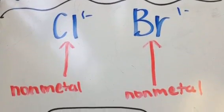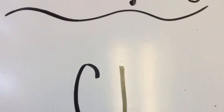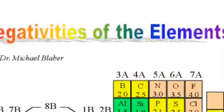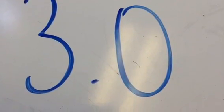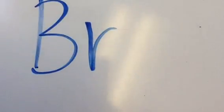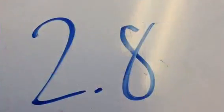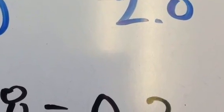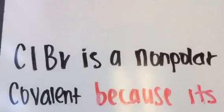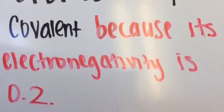The next example is chlorine and bromine — both nonmetals. We have to find the electronegativity of Cl, so we look on the chart and we see that it is 3.0. Next we have to find the electronegativity of Br — we look on the chart and it is 2.8. Once again we have to find the difference, and we get 0.2. So ClBr is a nonpolar covalent bond because its electronegativity difference is 0.2.